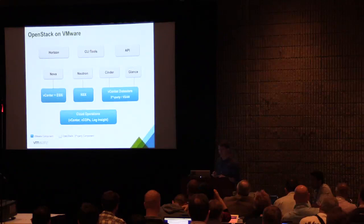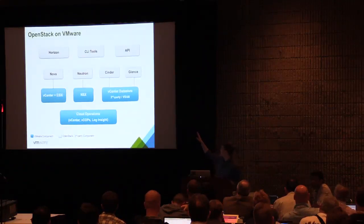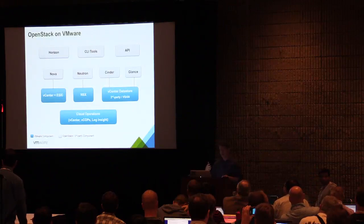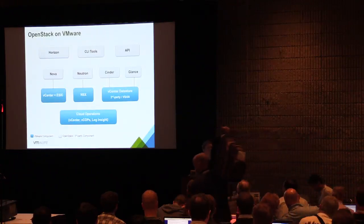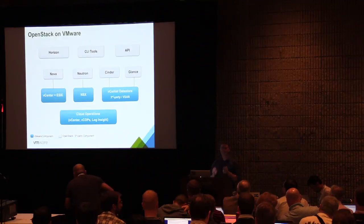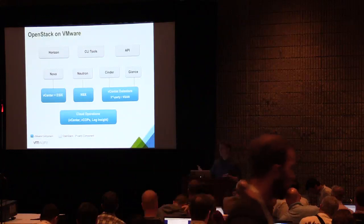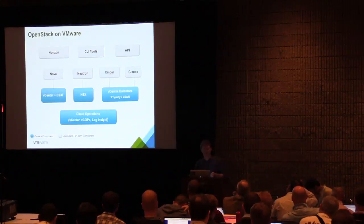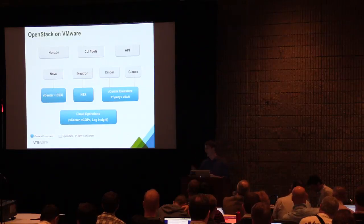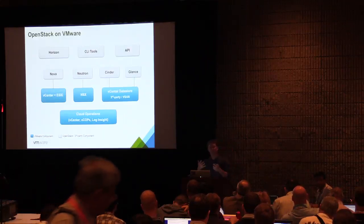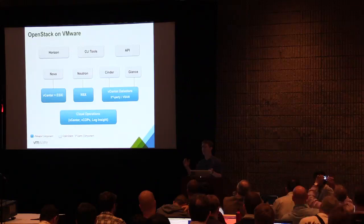This is a high-level picture of what we're demonstrating. We'll show people using Horizon, the CLI tools, or the API tools to provision standard OpenStack interfaces from Nova, Neutron, Cinder, and Glance. When you're using OpenStack with VMware, to your developers and people consuming resources, we use only the standard interfaces. Anytime in this demo where you see a VMware tool, it's me operating as the cloud administrator or architect troubleshooting an issue or doing capacity planning. If you're a developer in this environment, you only ever use the standard OpenStack tools and APIs.